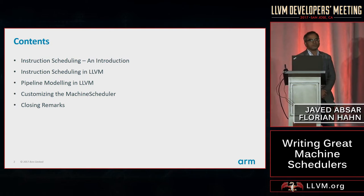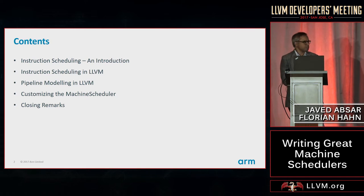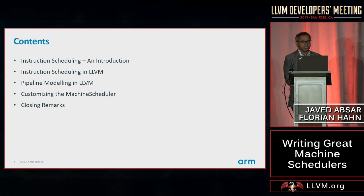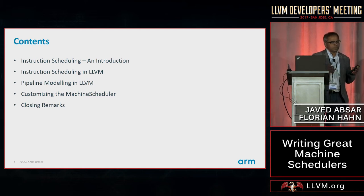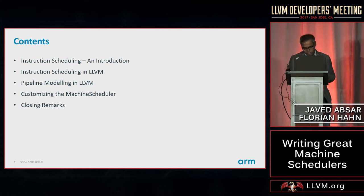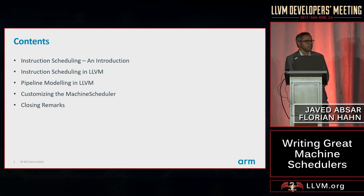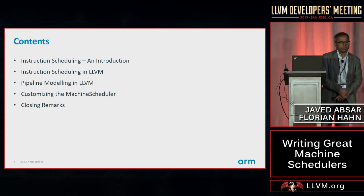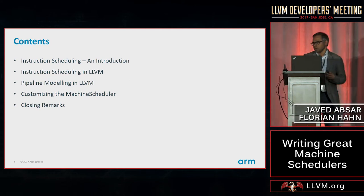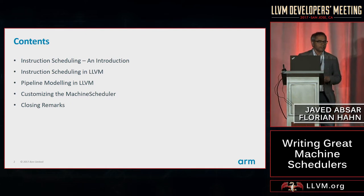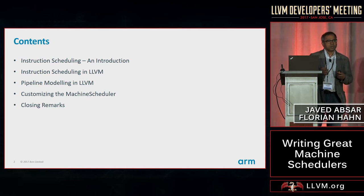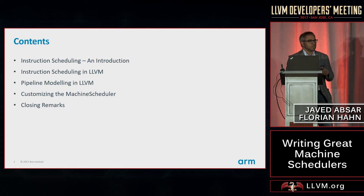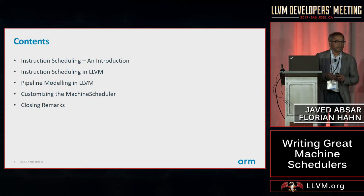We will go with the following topics: start off with an introduction, a brief recap on instruction scheduling just to jog our memory, and then Florian will get into the details of scheduling as it happens in LLVM — the scheduling algorithm and how the scheduler fits into the overall LLVM flow. The scheduler needs a precise model of the processor pipeline, so we'll cover how you model the processor pipeline in LLVM using TableGen. After that we'll cover extending the generic default scheduler to customize it, and we'll finish with general guidelines and closing remarks.